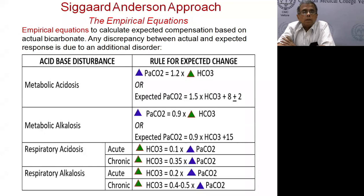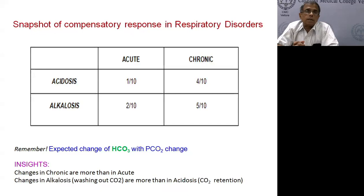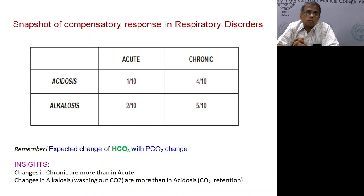The American empirical equations are difficult to remember, but to summarize: in an acute respiratory disorder, for every 10 mmHg rise in CO2, the rise in bicarb is 1; for chronic, it is 4. For alkalosis, the bicarb change is 2 for acute and 5 for chronic. Changes in chronic states are more than in acute, as expected, and changes in alkalosis are greater than in acidosis.